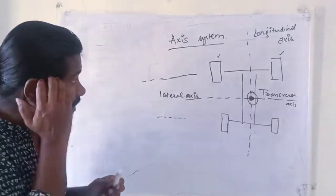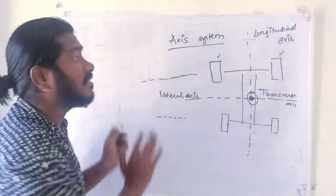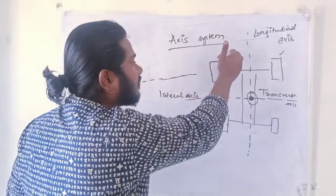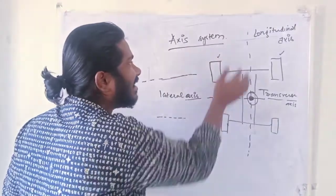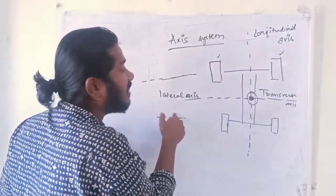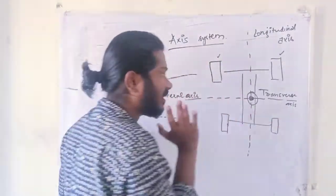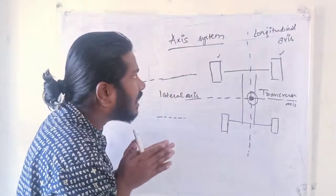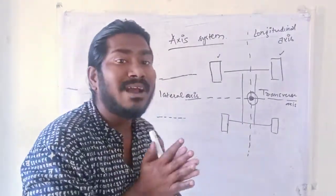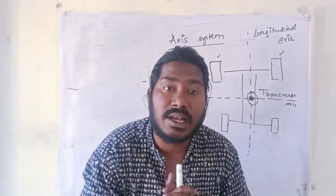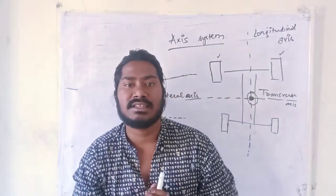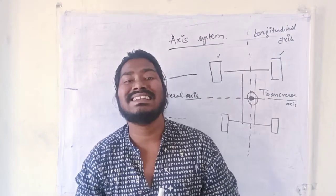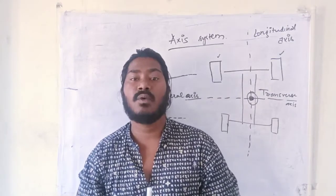It is very important to always remember this axis system. The axis that passes front to rear is longitudinal, right to left is lateral, and top to down is the transverse axis. The reason to remember this is because of the movements associated with these axes when a vehicle is in a dynamic condition.